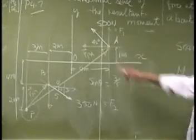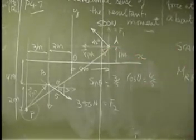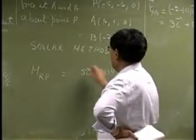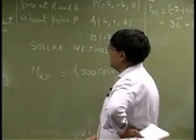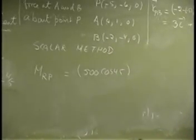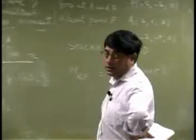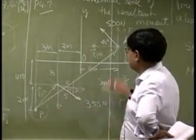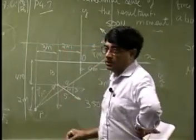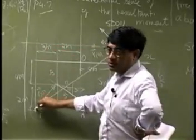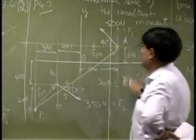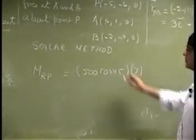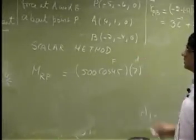For the first component — let's say the horizontal one — that's 500 cosine 45. That's the magnitude of the component. Then we need the perpendicular distance between this component and point P. We push it all the way to the end and look at that distance, which is 6 plus 1 equals 7. So we multiply this by 7: F times D.